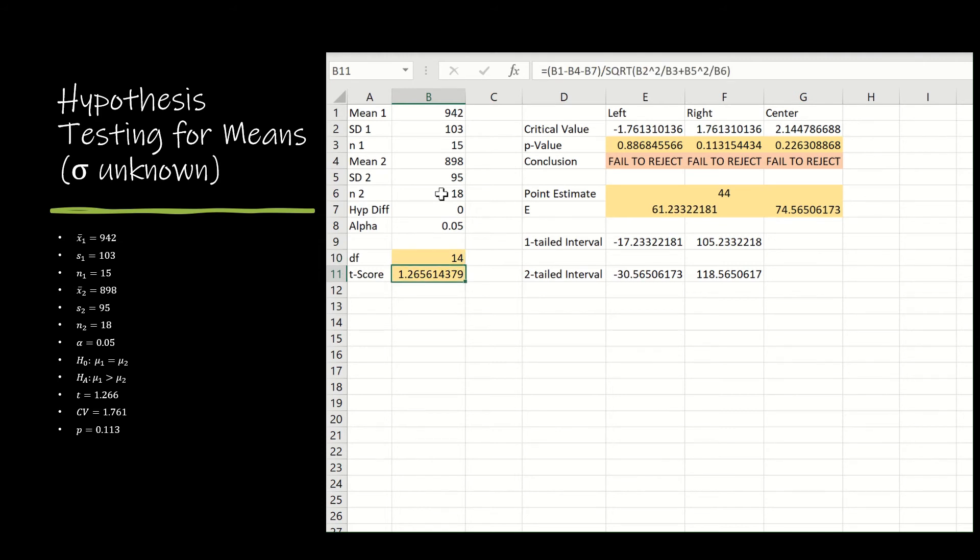The t-score is just the t-score formula. So all I'm doing is having Excel go to the proper places. I'm taking the first mean minus the second mean minus the hypothesized difference, dividing that by the square root of b2 squared divided by b3, and then b5 squared divided by b6. That's my t-score.